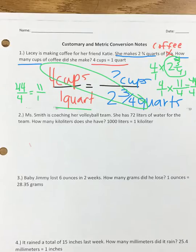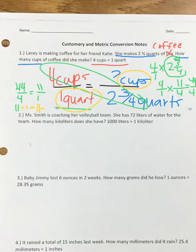Simplify forty-four over four by dividing both by four: forty-four divided by four is eleven, and four divided by four is one, which equals eleven. The last part is to divide by the number left — we have one quart left, so eleven divided by one is eleven. Our units are cups, so eleven cups is our answer.